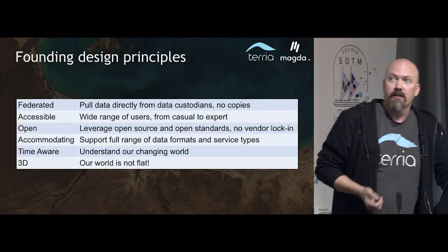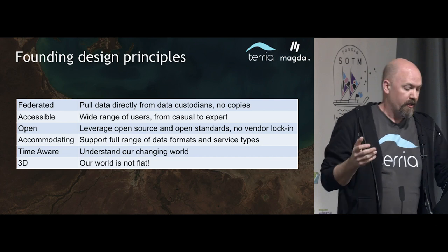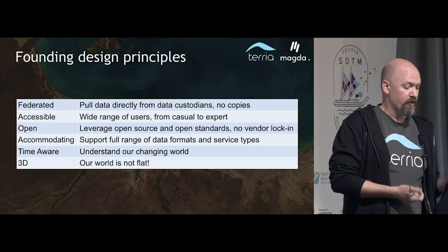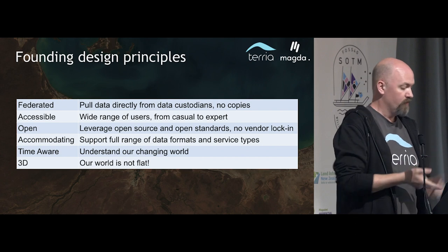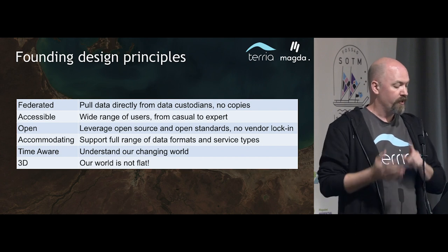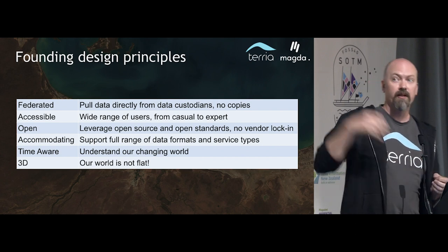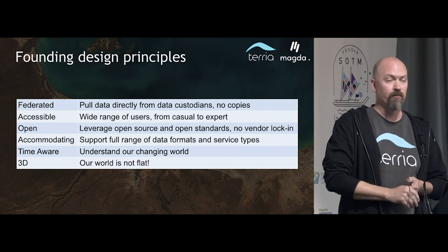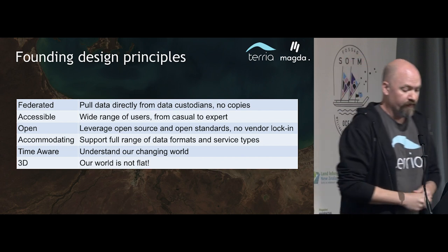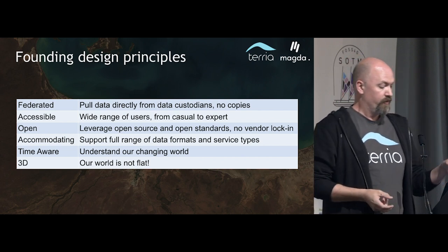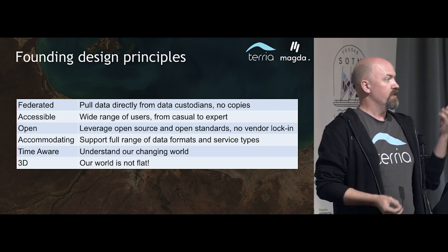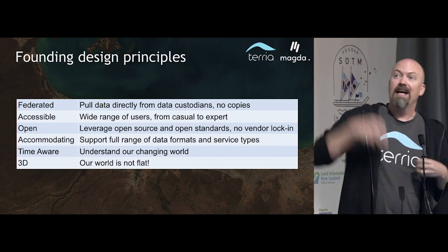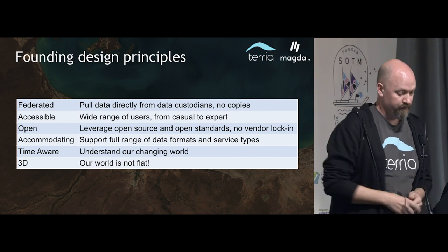These are the two building blocks for our digital twin. The reason they work so well together is because they share a lot of founding design principles: that they should be federated, accessible, open, accommodating, time-aware, and in Terria's case, 3D — because the world isn't flat. These are the kinds of things that we believe have to be properties of digital twins.